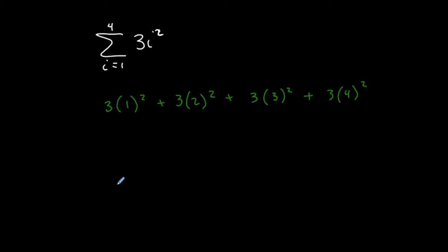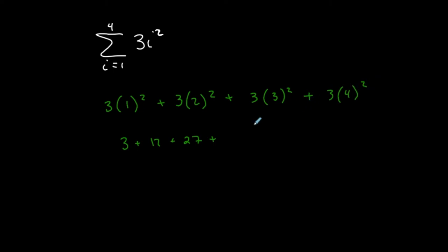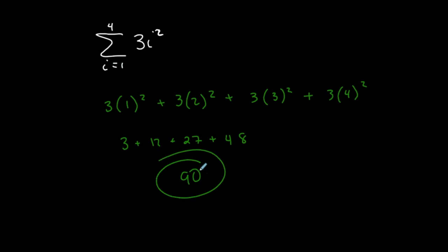Adding all the terms: 3 times 1 squared is 3, plus 3 times 4 is 12, plus 3 times 9 is 27, plus 3 times 16 is 48. Then add them all up: 48 plus 27 plus 12 plus 3 equals 90. So the summation equals 90.